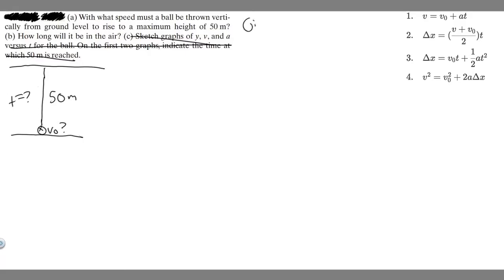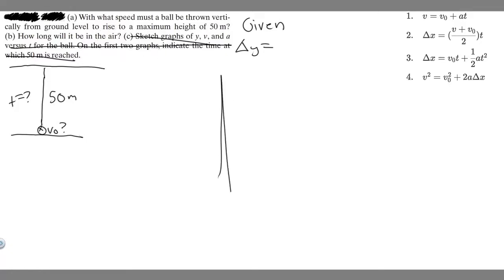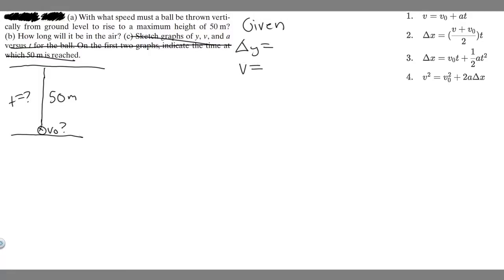So let's write down what we're given. I always like to write out each variable of the kinematic equations and then determine whether or not we're given it. So we have delta y — these say delta x, but just keep in mind that's for the x-plane. We're focusing on the y-plane because this is freefall. So just pretend it's delta y; they work the same exact way. We have delta y, v, v sub 0, a, and t.